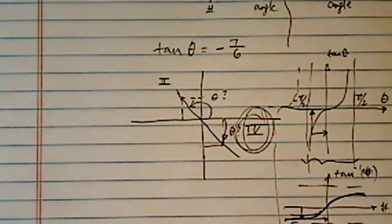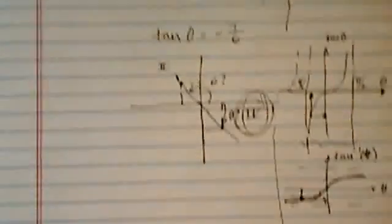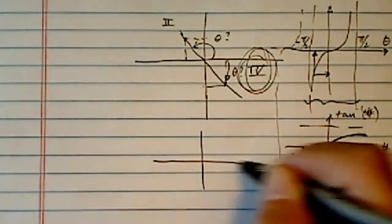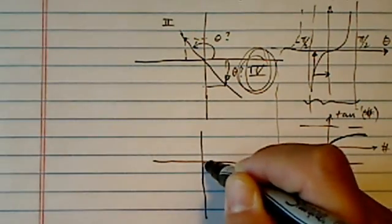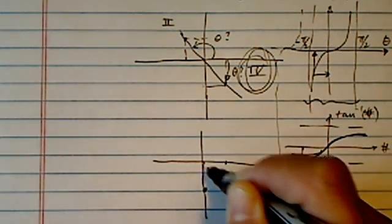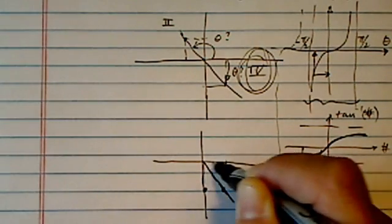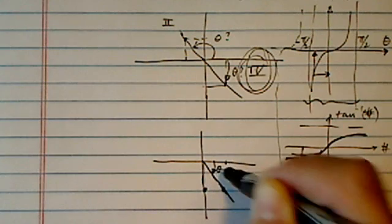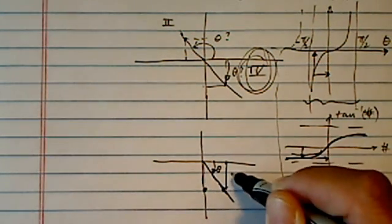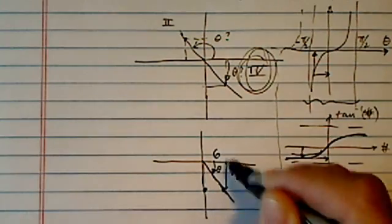Once you have this one settled in quadrant 4, the rest of the stuff is pretty easy. Okay, so let's draw this triangle out. We know it's in quadrant 4 and minus 7 and positive 6. So here's my terminating arm. Here's the angle theta. It goes the other way around. And here's the 7 units and then here's the 6 units.